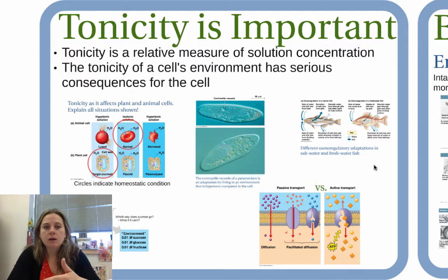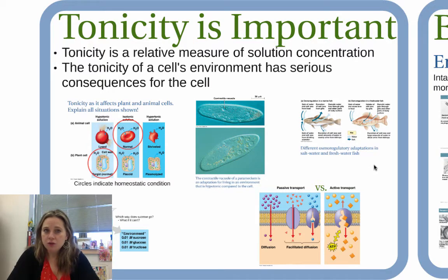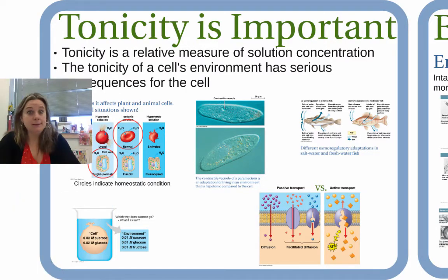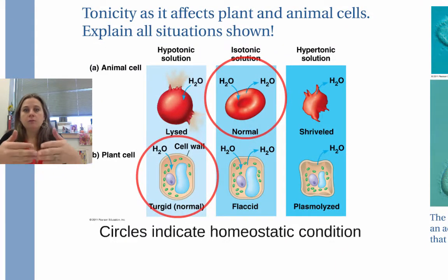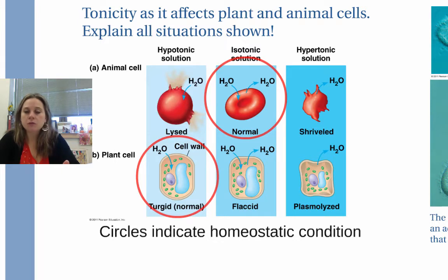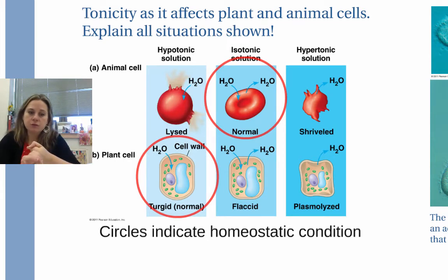The environment can have serious consequences for a cell if the cell doesn't do certain things to prevent loss or gain of molecules as needed. This affects both plant and animal cells. There are three different terms we use: hypotonic solutions, isotonic solutions, and hypertonic solutions.